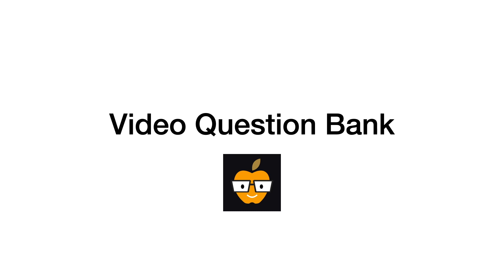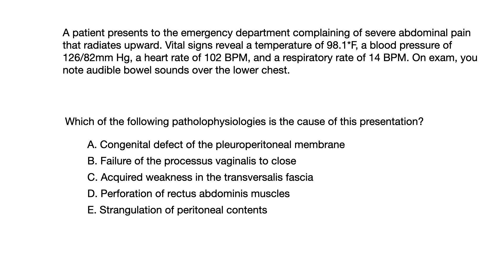It's time for another high-yield and free USMLE and Comlex practice question. A patient presents to the emergency department complaining of severe abdominal pain that radiates up. Vital signs reveal a temperature of 98.1 degrees Fahrenheit, a blood pressure of 126 over 82, a heart rate of 102, and a respiratory rate of 14. On exam, you note audible bowel sounds over the lower chest. Which of the following pathophysiologies is the cause of this presentation?